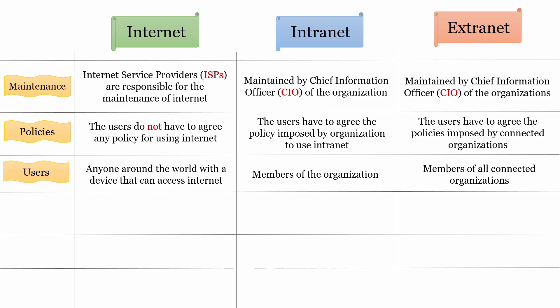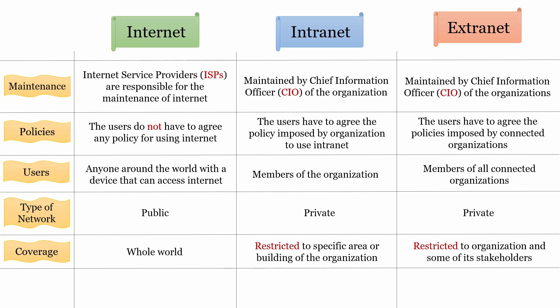When it comes to users: anyone around the world with a device that can access internet can use internet. Only members of an organization are authorized to access intranet. When it comes to extranet, members of the organization and members of all connected parties can access extranet. If we talk about the type of network: internet is a public network, while intranet and extranet are private networks. When it comes to coverage: being a global network, internet covers the whole world. Being a private network, intranet is restricted to a specific area or building of the organization. Being a shared network, extranet is restricted to the organization and some of its stakeholders.